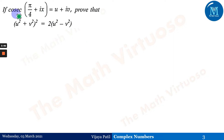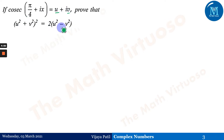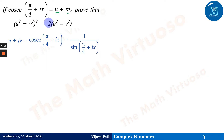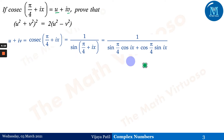The second question: if cosec(π/4 + ix) = u + iv, prove the given identity. Similarly, we write u + iv = 1/sin(π/4 + ix), using the sine addition formula sin(a + b) in the denominator.